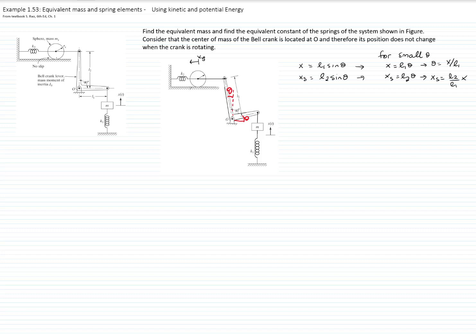Remember that the sphere is rotating without slipping. Therefore, we can relate the rotation of the sphere with the displacement of its center of mass. If theta sub s is the rotation of the sphere, the point of contact behaves as the instantaneous center of rotation. The displacement of the center equals theta_s times r_s, the radius of the sphere. Solving for theta sub s gives x_s divided by r_s, which substituting x_s yields L2 over L1 times x divided by r_s.